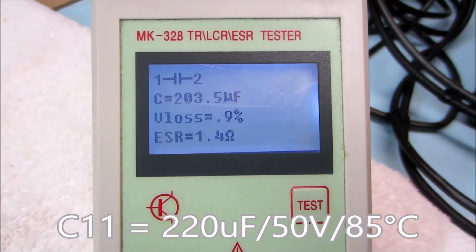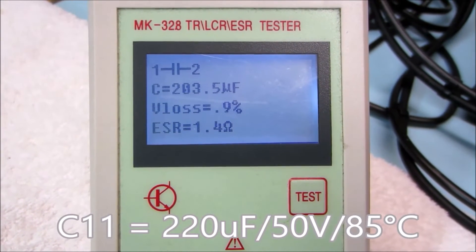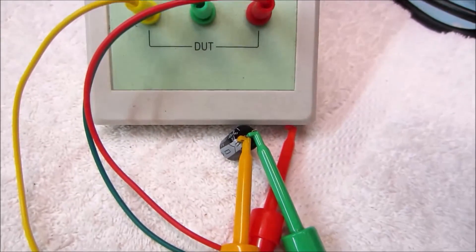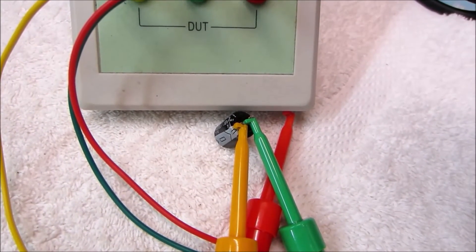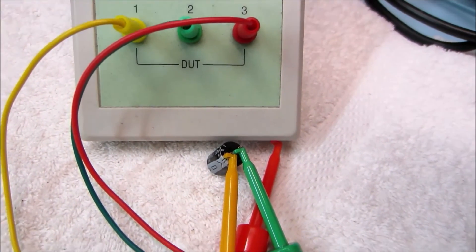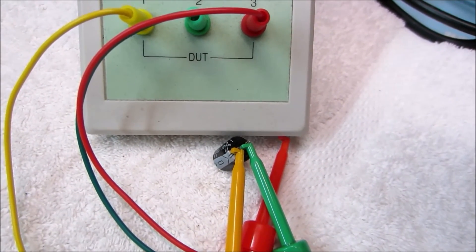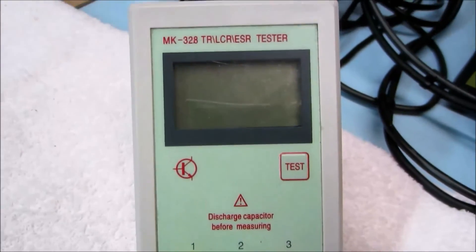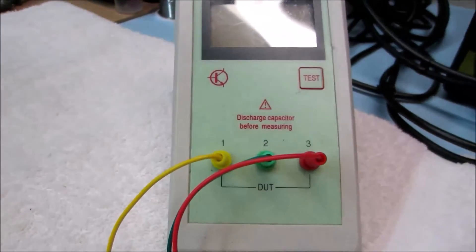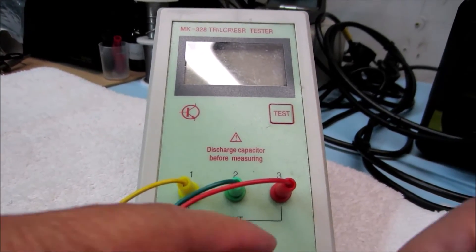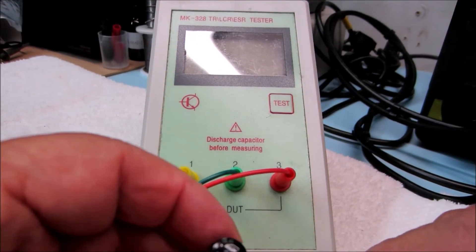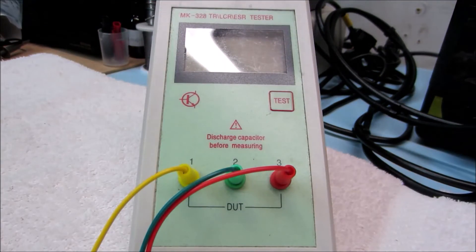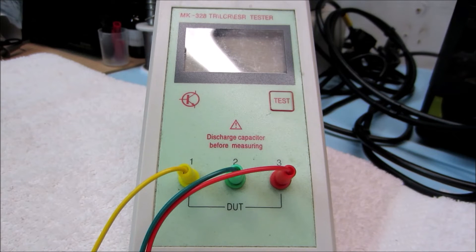203 microfarad, voltage loss less than 1%, ESR 1.4 ohms. Nothing to be alarmed about here. Yet, we know that this is leaking electrolyte everywhere. So what's causing our failure? Is it the leaking electrolyte shorting out the circuit? Yes, it is. Or is it the component? Well, it's the component that's causing the leaking electrolyte. But the component values, as shown on this tester, indicate that it's perfectly fine. So what we're trying to prove here, look how wet that is.